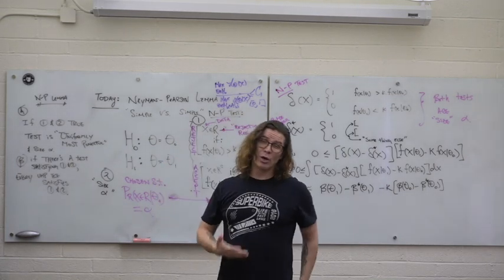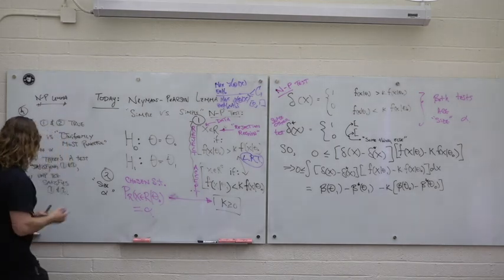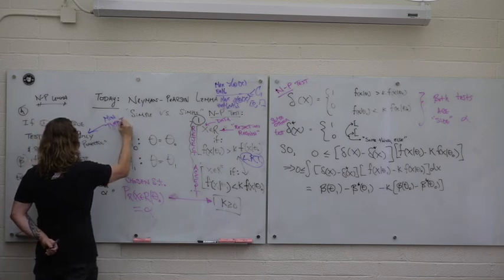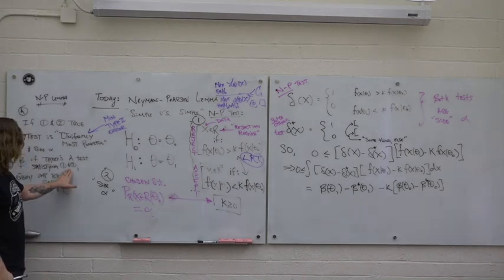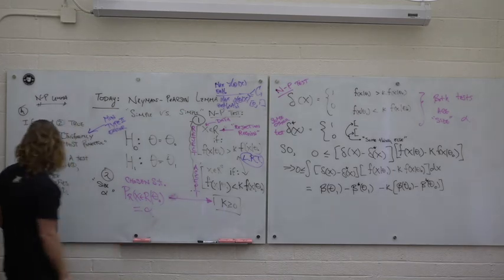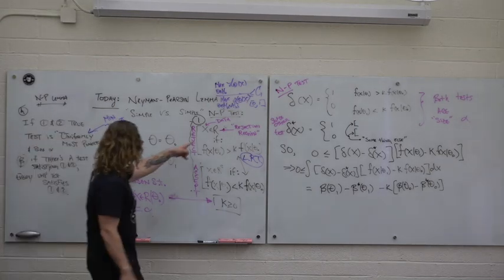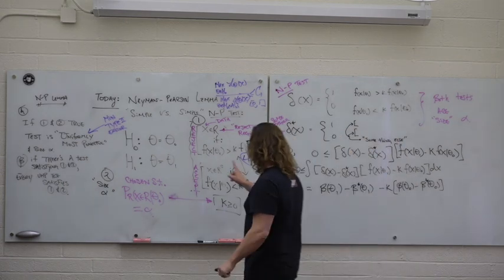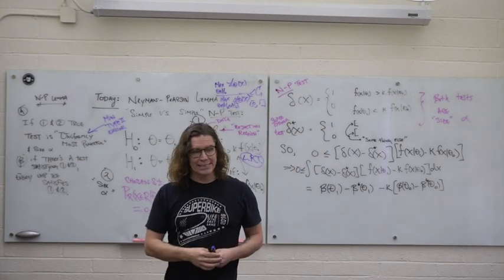The Neyman-Pearson Lemma says that if you follow this rule and lock your max type one error to be alpha, then your test is going to be uniformly most powerful. In the alternative space the power function is higher, meaning it has more power. One minus the power in the alternative space is the type two error rate, so this test minimizes that. The lemma also says if there's another UMP test, it really is this test in disguise — that's the if-and-only-if statement.